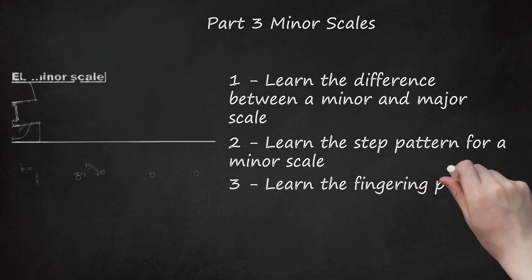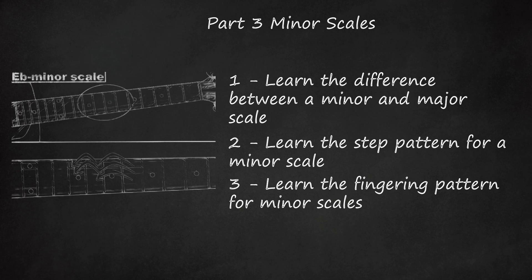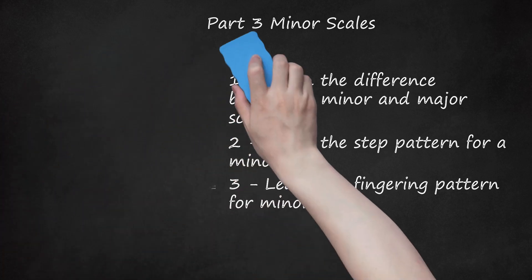Learn the fingering pattern for minor scales. Just like with majors, the notes in minor scales are played with a certain fret pattern you can slide up and down the neck to play different minors. As long as you're starting on the low E or A string, the minor pattern is the same. For example, an E-flat minor scale would be: A string — E-flat (fret 6), F (fret 8), F-sharp (fret 9); D string — A-flat (fret 6), B-flat (fret 8), B (fret 9); G string — D-flat (fret 6), E-flat (fret 8).